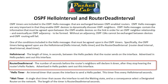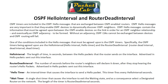The router dead interval is the number of seconds before the router's neighbors will declare it down after they stop hearing hello packets. An easier way to say this: it's basically a countdown timer. The router dead interval counts down from whatever value it's set to in seconds, and if it reaches zero without receiving a hello message from that neighbor, it will declare that neighbor down. This value is also advertised in the hello packets.